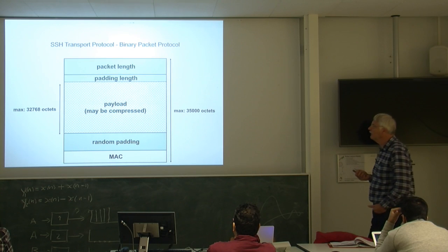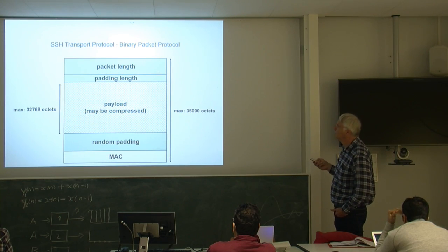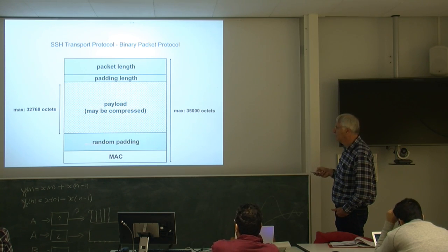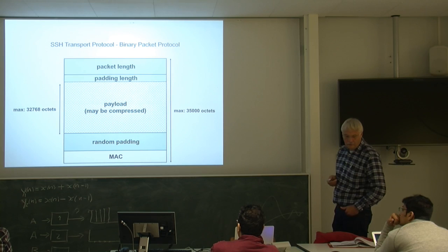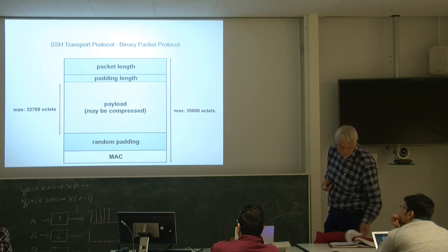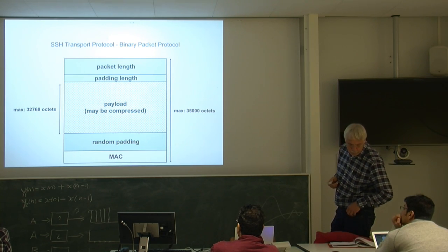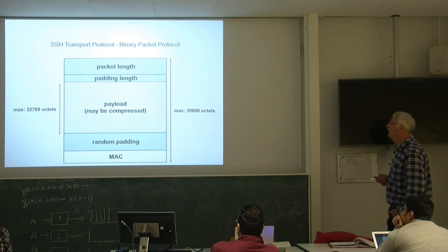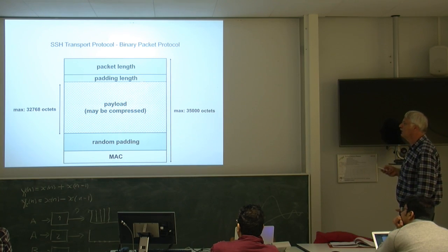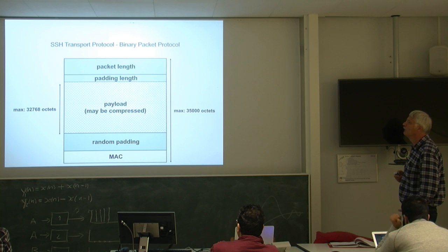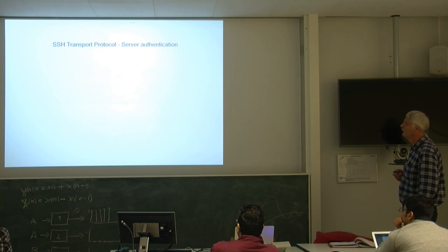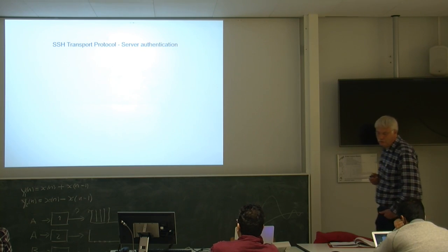How do packets look like for SSH? You start with packet length as padding field. This is the payload. And then, you have padding at the end and the message authentication code at the end. This is stuff that you can analyze with Wireshark.